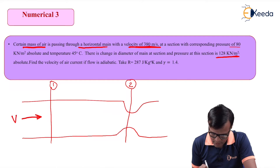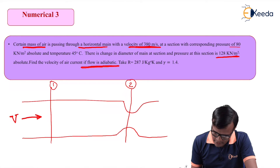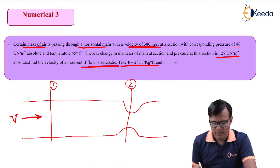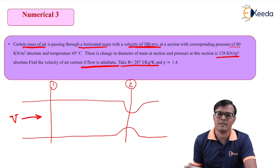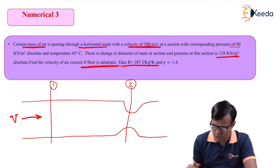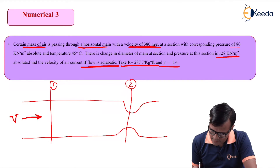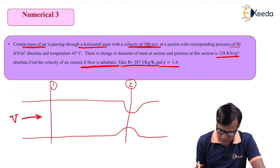The flow is adiabatic, meaning heat is neither taken into the system nor given out. The value of R is 287 joules per kg per kelvin — this remains constant for all problems in our syllabus. If it is not given, we should assume it. The value of gamma (γ) is 1.4.